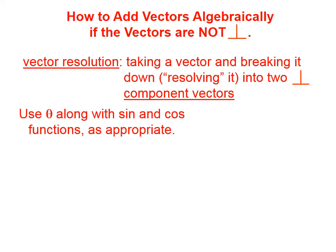To do this, we use the angle theta along with sine and cosine functions as appropriate. For example, suppose we have a vector J that is at an angle theta above some reference line. Could be horizontal, could be east, could be any number of things. If we give an x and y direction, then what we want to do is break vector J into an x portion or x component, and a y portion or y component.